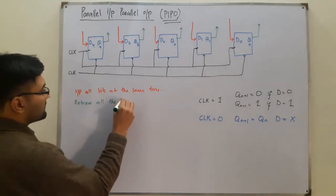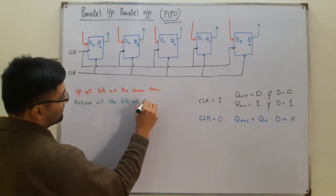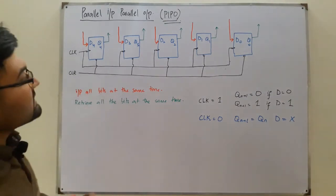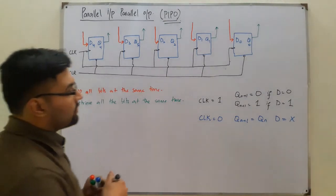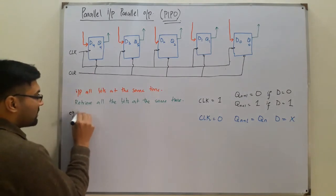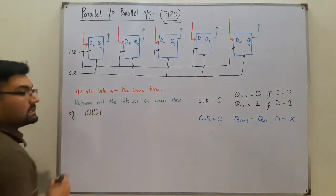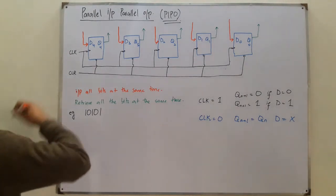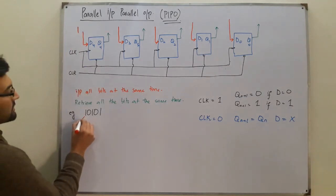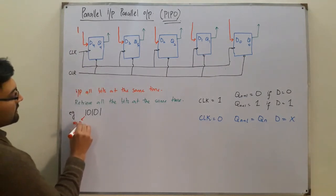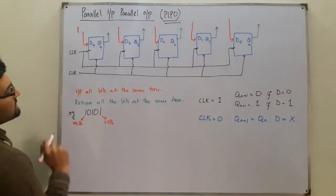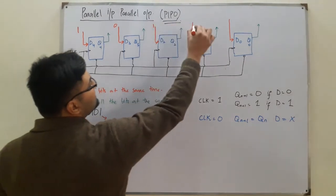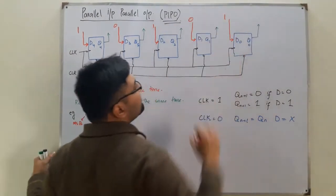For example, let's say I want to store the five-bit number 10101. All inputs are available to me: D4 is the most significant bit and D0 is the least significant bit. So I enter 1 at D4, 0 at D3, 1 at D2, 0 at D1, and 1 at D0.